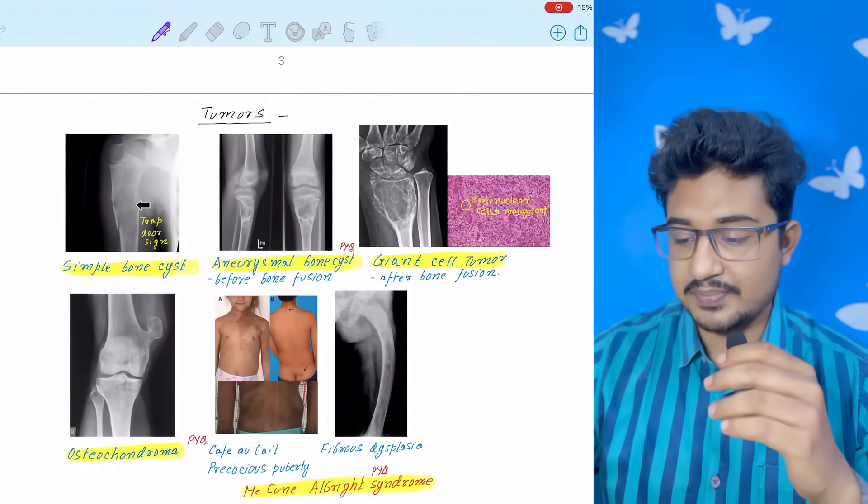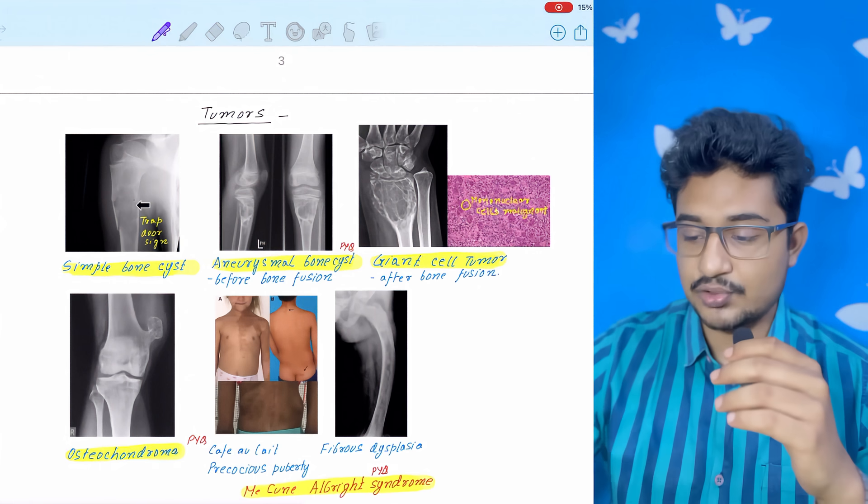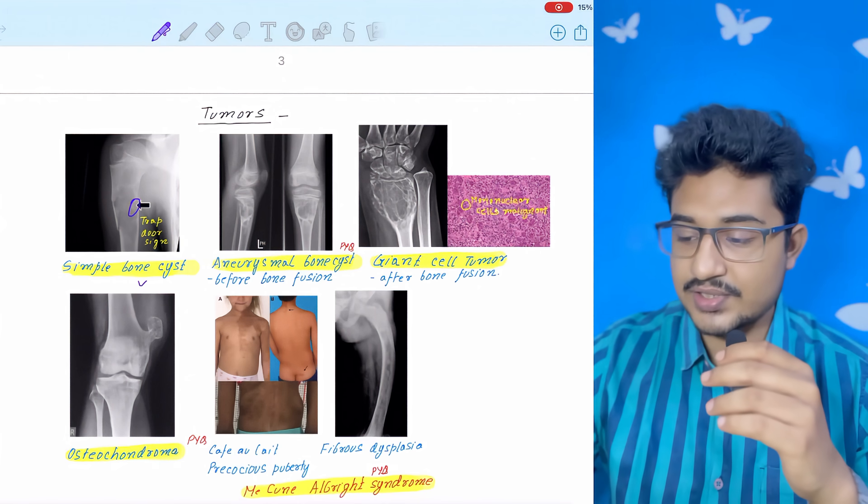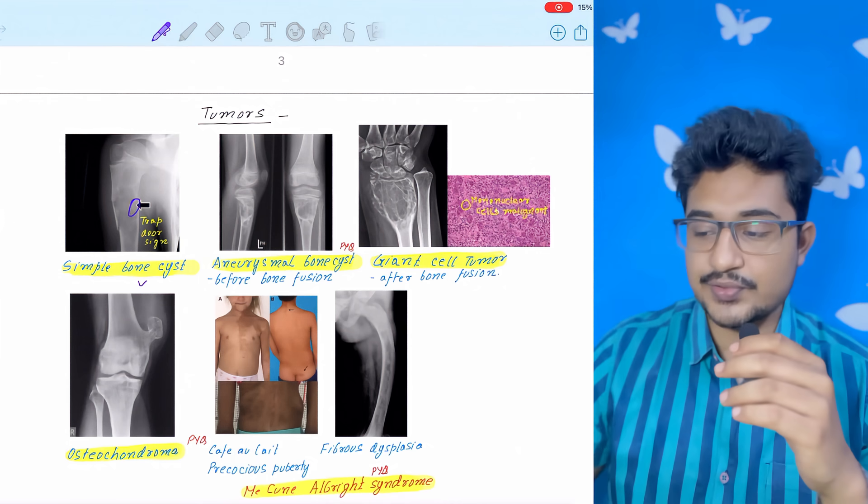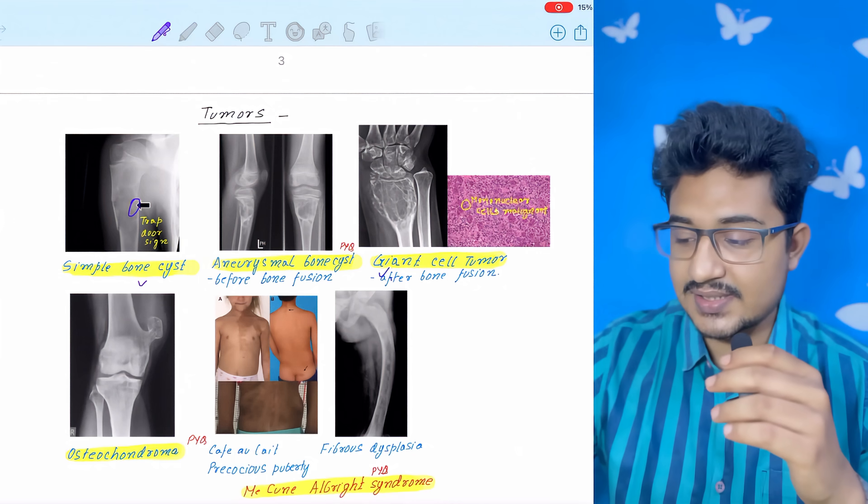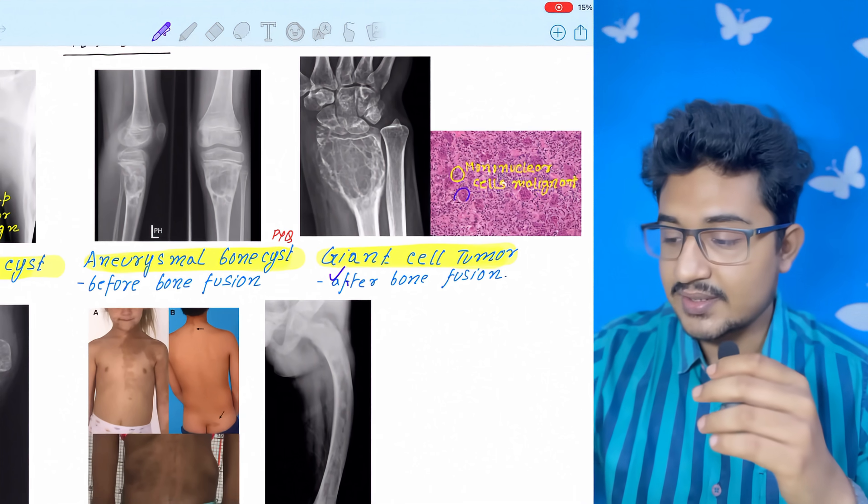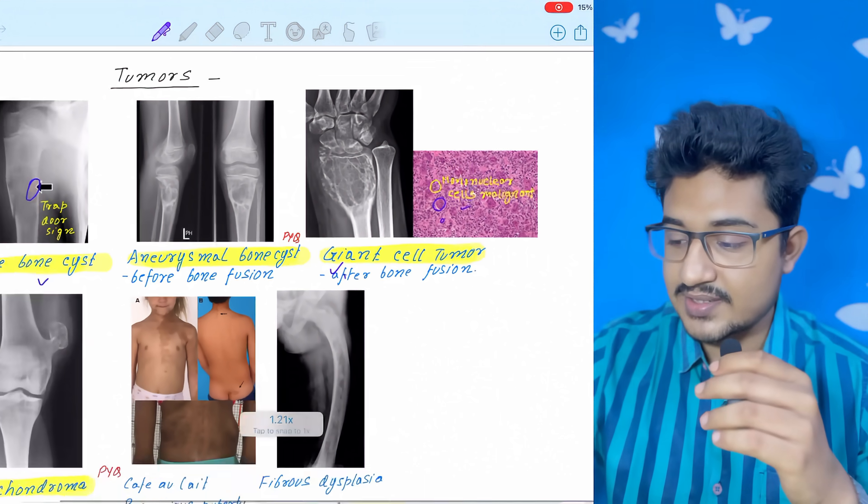Some X-ray appearances of tumors. The trapdoor sign, as you can see. This trapdoor sign is seen in simple bone cyst. Aneurysmal bone cyst before bone fusion and after bone fusion. This is giant cell tumor. In giant cell tumor you will get giant cells, but the malignant cells are the mononuclear cells.